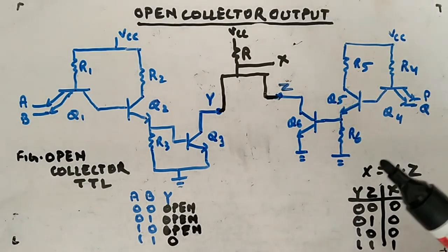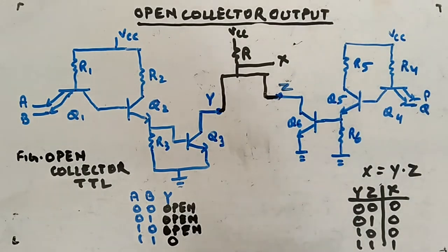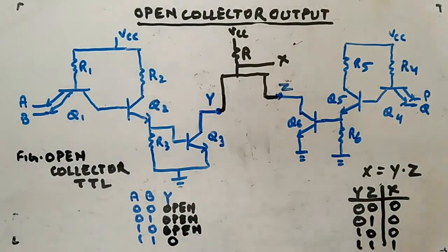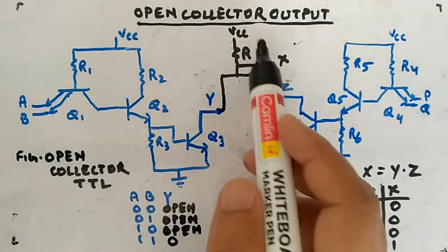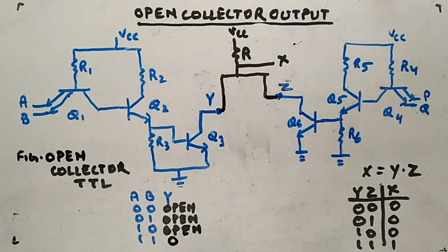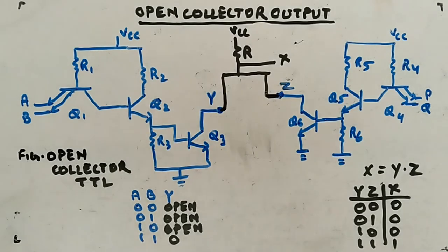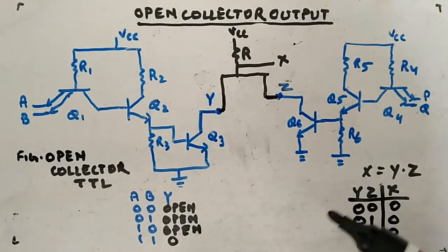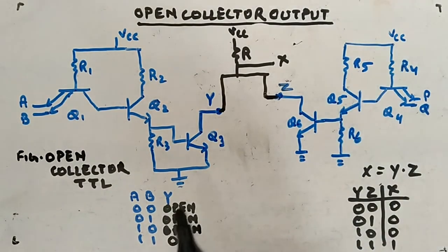So those are open collector TTL circuits. Individually each circuit has its own truth table, but when connected in this wire-AND fashion, X gives the ANDed version of the two outputs. That's why we implement open collector. There is one more thing remaining — tri-state logic — which is a combination of open collector and totem pole. That is the remaining part of TTL, and I will cover it next.